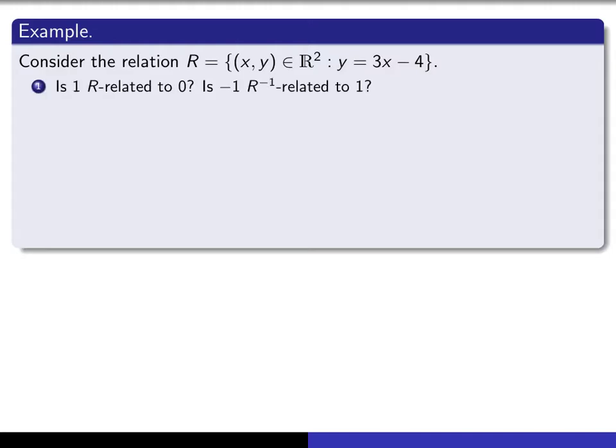Is it the case that 1 is R-related to 0? That means that (1,0) is an element of the relation. So does (1,0) satisfy this equation? If you replace x by 1, you get -1, you don't get 0. So the answer to this one is no.